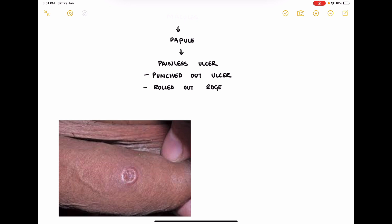The characteristics of this ulcer is that it is punched out and it has rolled out edge. In this image, I want you to notice the rolled out edge of the ulcer.